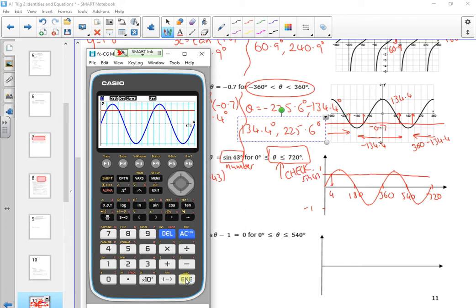So that value there gave me 43. From the symmetry of the graph, you can see it's 43 in from there. So it's like a minus 43 away from 180. From the symmetry of the graph, this other one is 43 that way from 360.